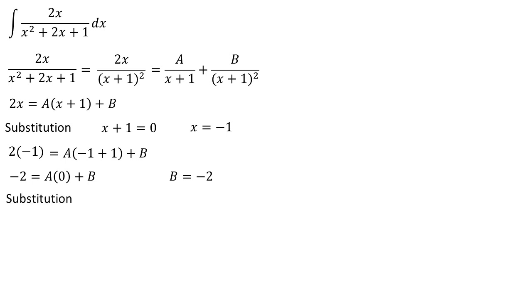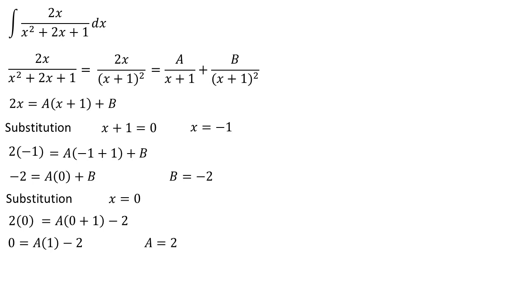Next, substitution x equals 0. This shows that 2 times 0 equals A times (0 plus 1) minus 2, or 0 equals A times 1 minus 2, so A equals 2.